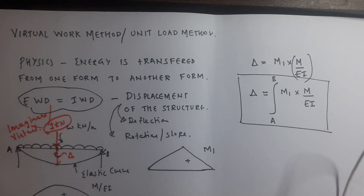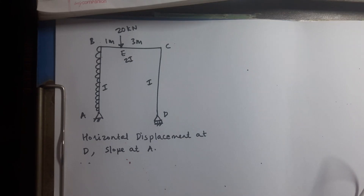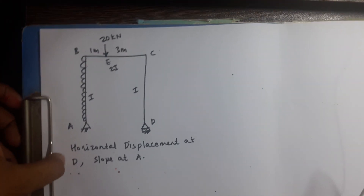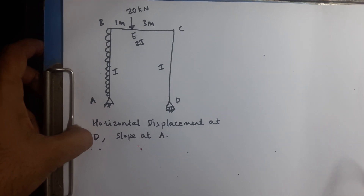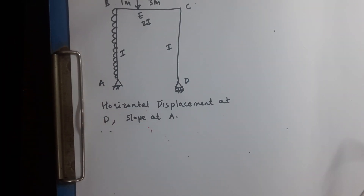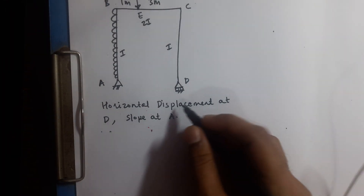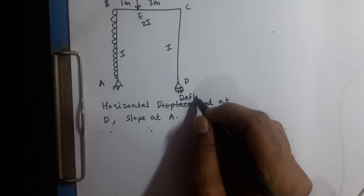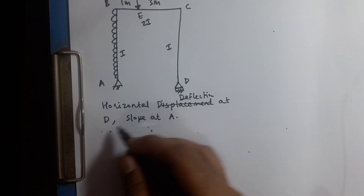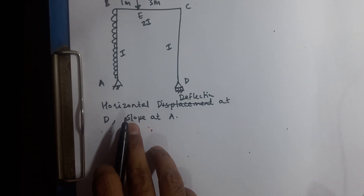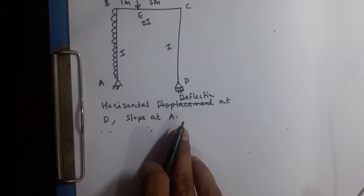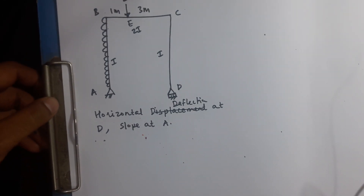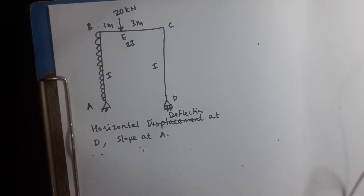We will now switch to the problem. In this problem we have to find displacement — specifically horizontal deflection at D and slope at A — and these two things we have to find by the unit load method.